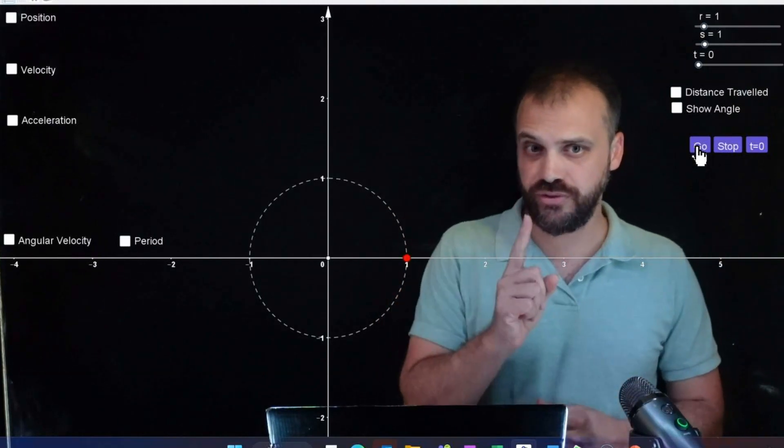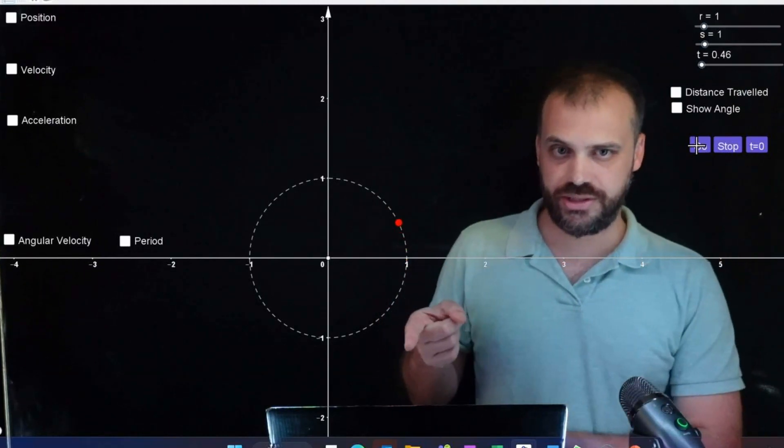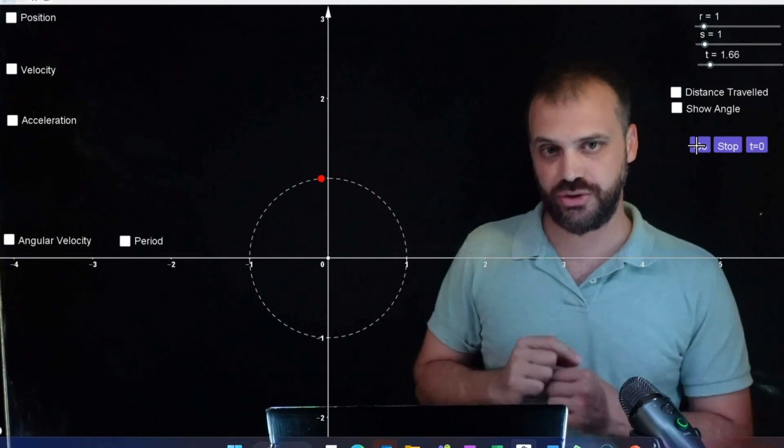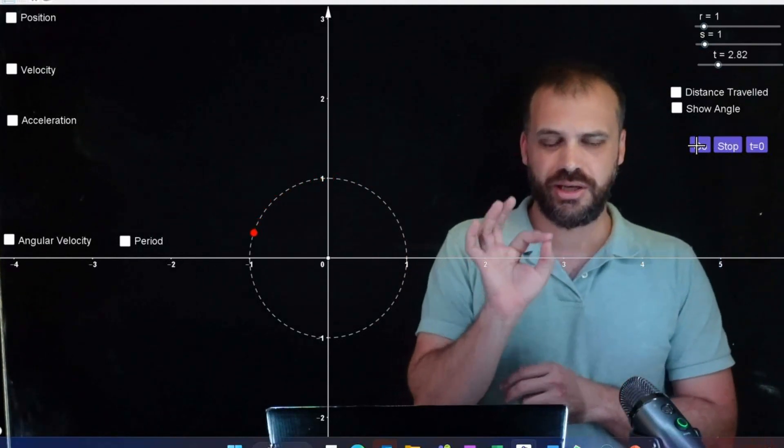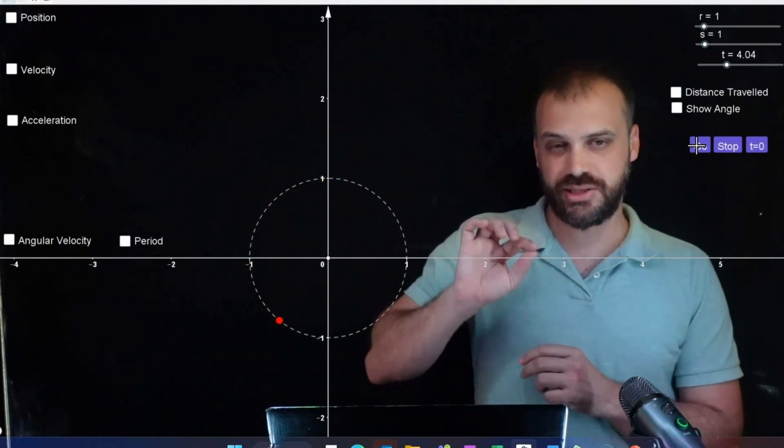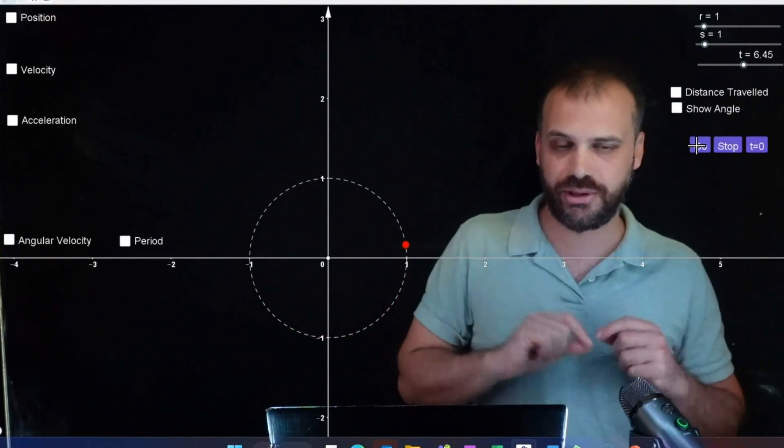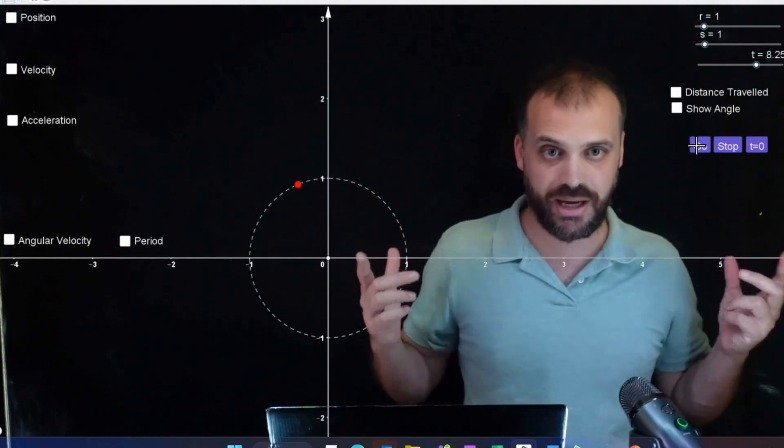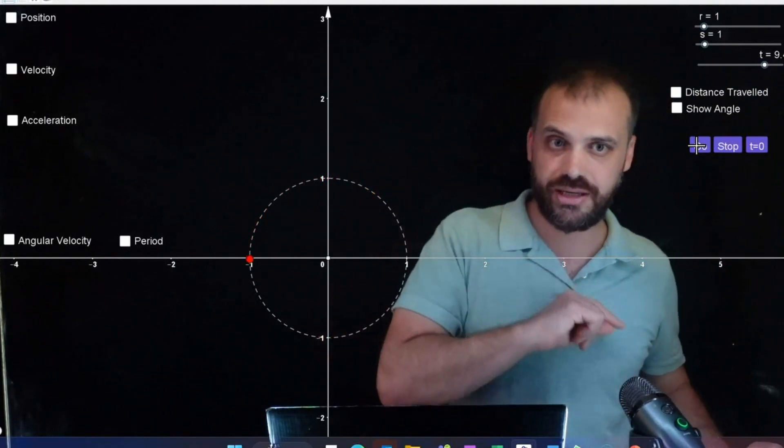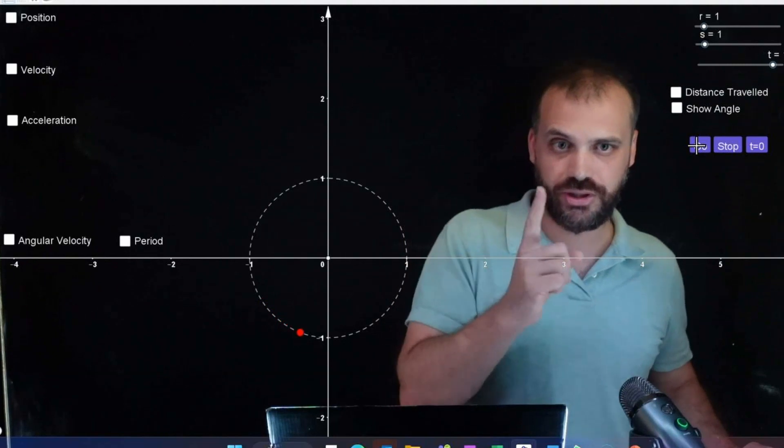So here we are. We're here to talk about uniform circular motion. This is circular motion - this little red dot moving around the circle. Uniform means that the speed remains uniform, remains the same. You can see my little red dot is not speeding up or slowing down. It's remaining at a constant speed. That's what we're doing, uniform circular motion.